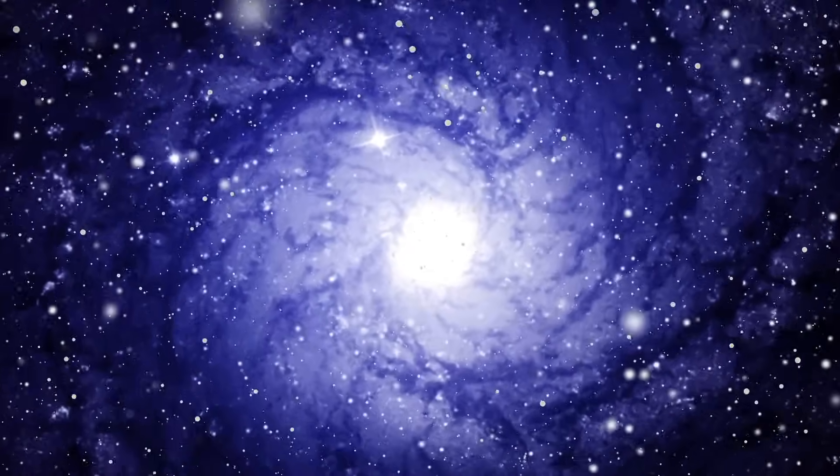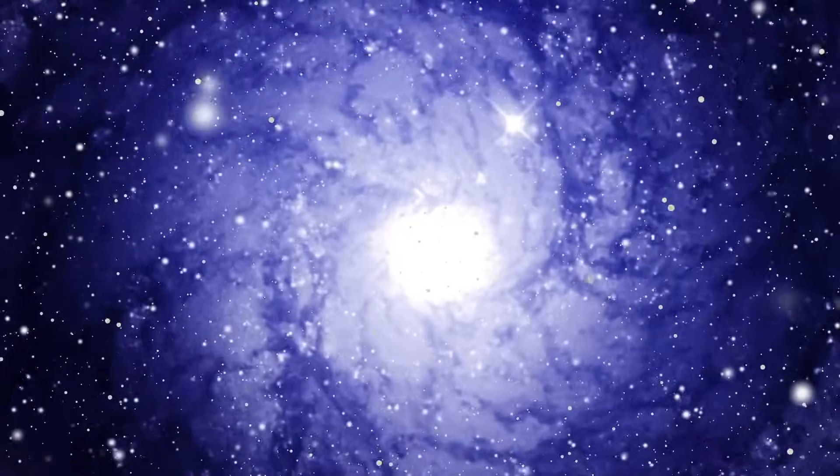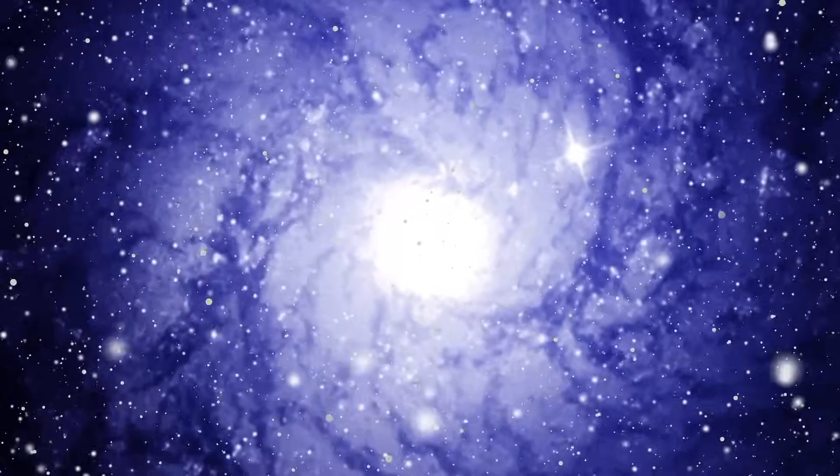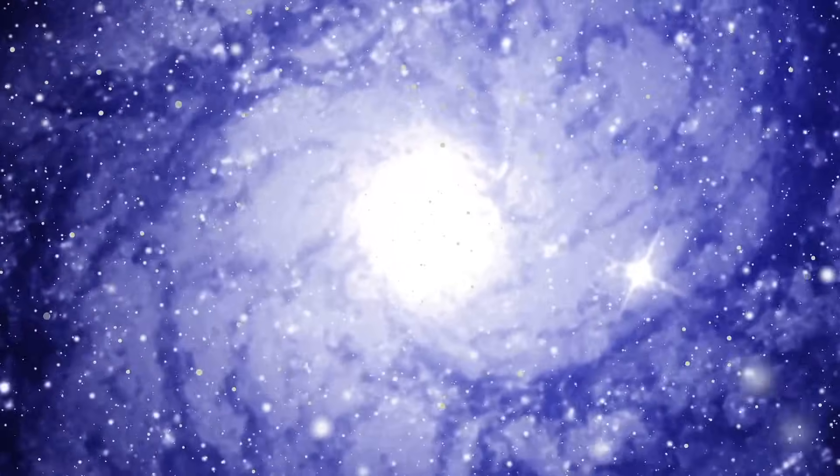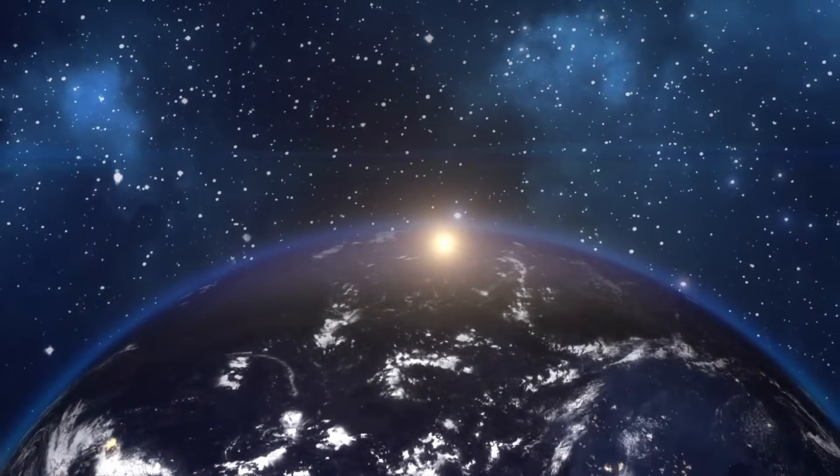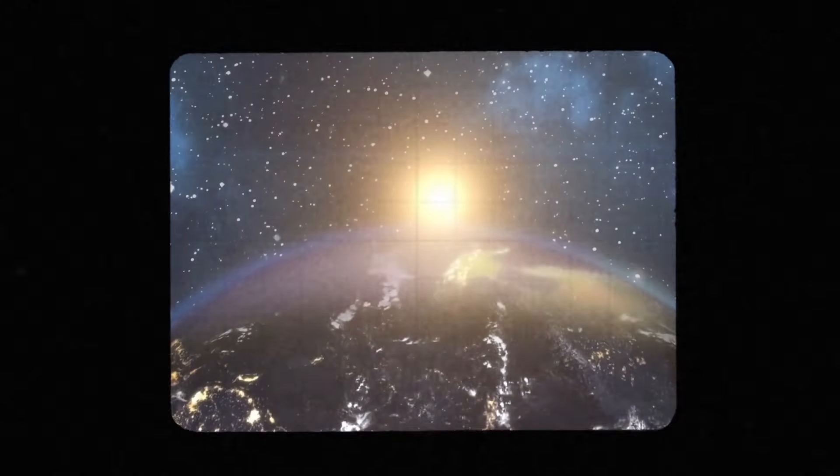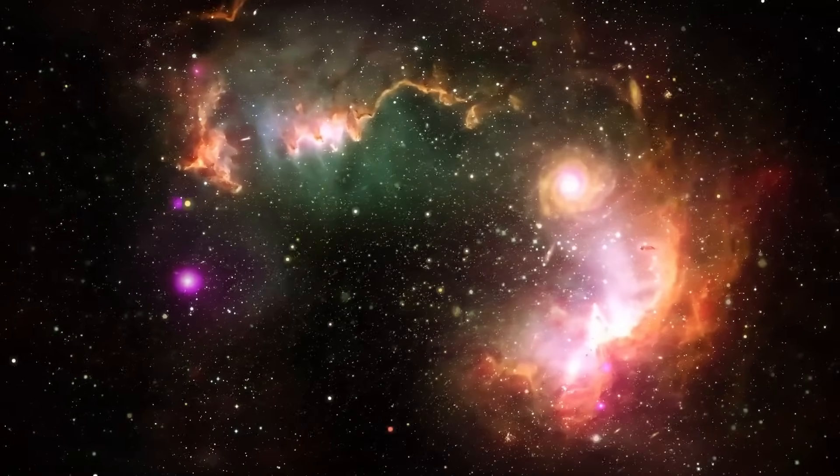Earth's atmosphere balances these temperature swings. At night, when the sun's rays don't reach us, it gets cooler. But the atmosphere prevents extreme drops. On the moon, with no atmosphere, it's a different story. Daytime surfaces hit 127 degrees Celsius, 400 Kelvin. While nighttime drops to -173 degrees Celsius, 100 Kelvin. That's a massive difference.